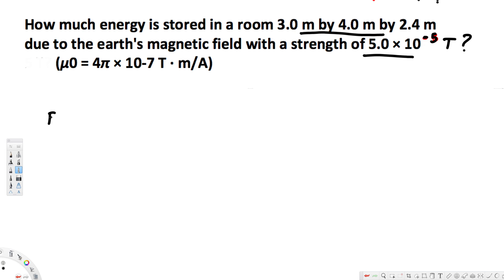Now, to find the energy stored in a room, we have to find the volume of the room that's given already. Volume times the magnetic energy density that is given by U. Now we know the volume. We can find this easily because we have the volume that's provided.